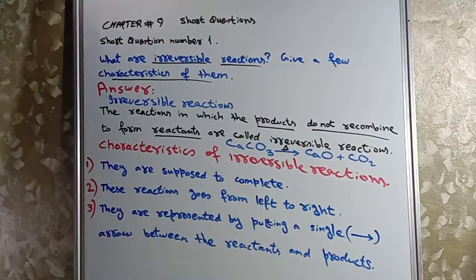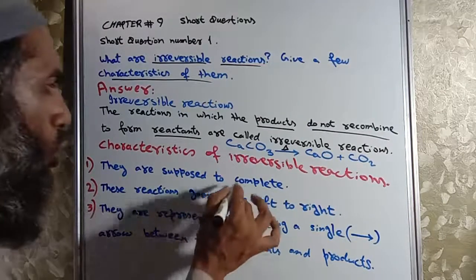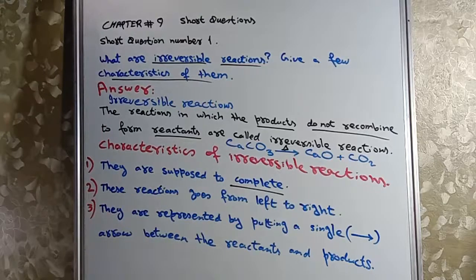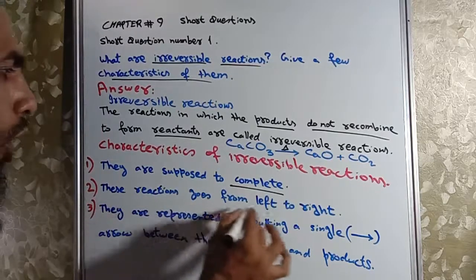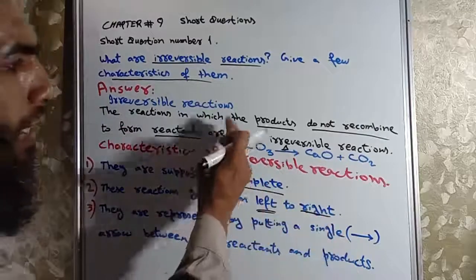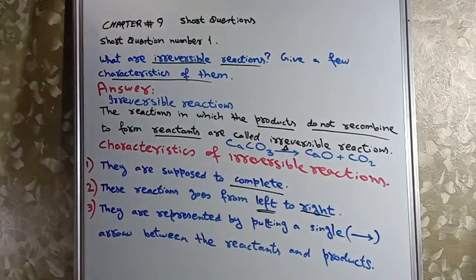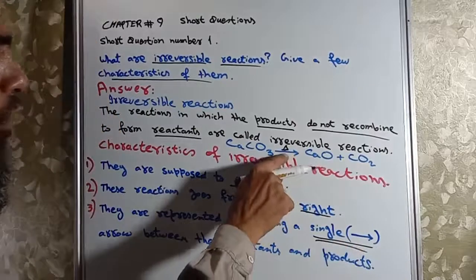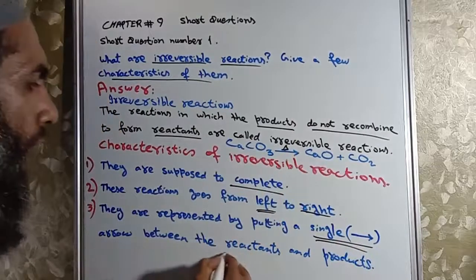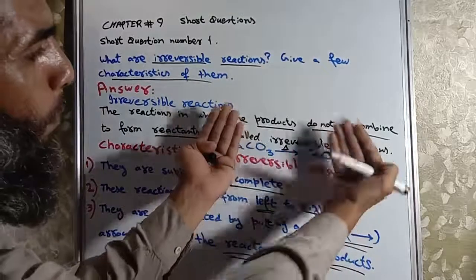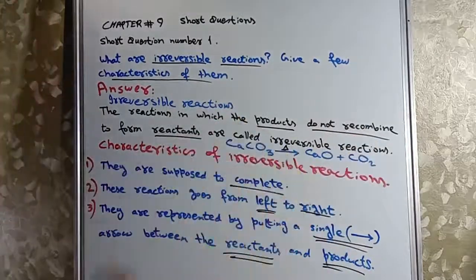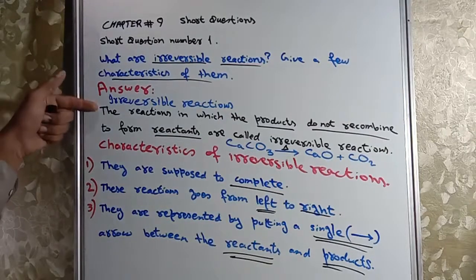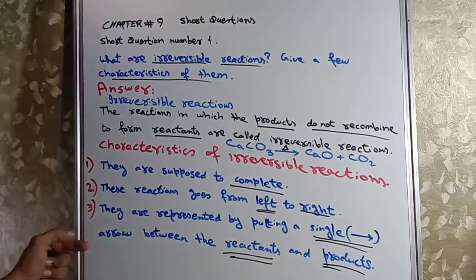Now characteristics. These reactions are supposed to be complete. These reactions go from left to right, left side to right side, and they are represented by putting a single arrow between the reactants and products. These are the characteristics.